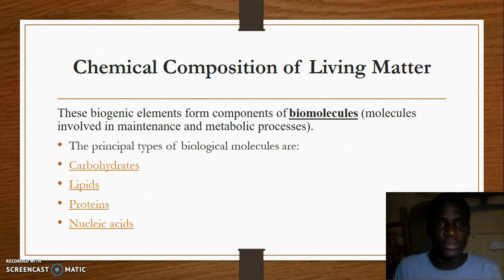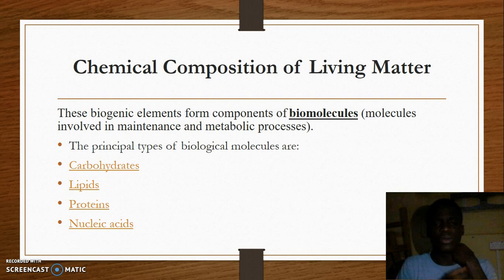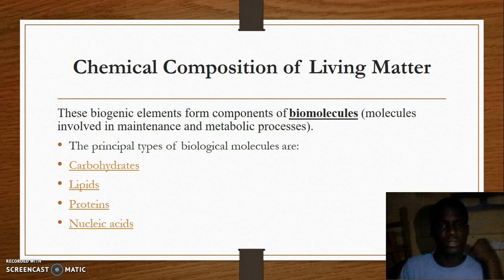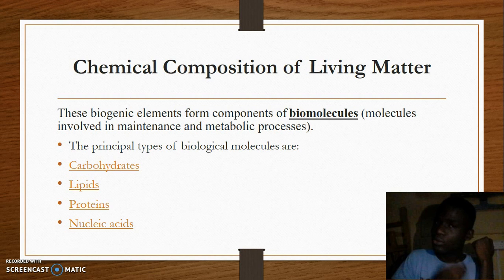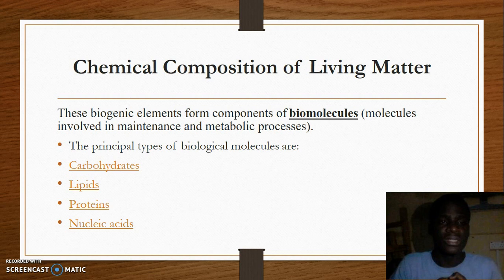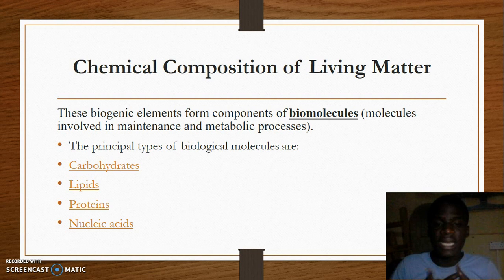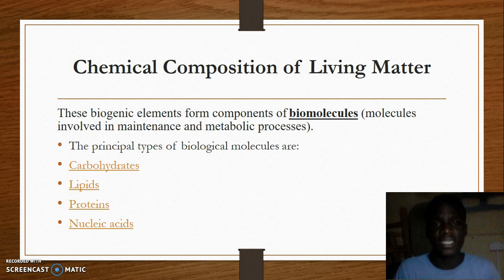These biogenic elements form biomolecules. Biomolecules are larger biological molecules that deal with maintenance and metabolism. For example, if I have a wound on my hand and I lose some skin, I expect that in a few days the skin should be replaced. The skin is made up of proteins and other biomolecules, so these biomolecules must be able to replace it. Their breakdown and synthesis releases energy into the body. The principal types of biological molecules are carbohydrates, lipids, proteins, and nucleic acids, which we will cover in subsequent lectures.